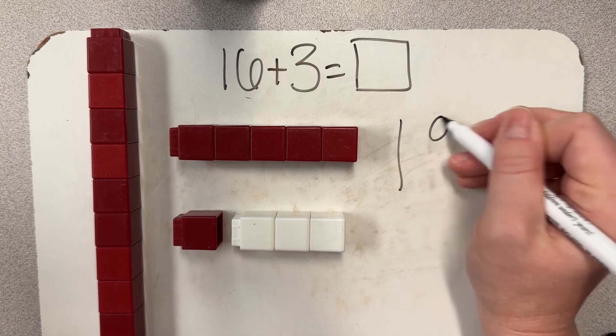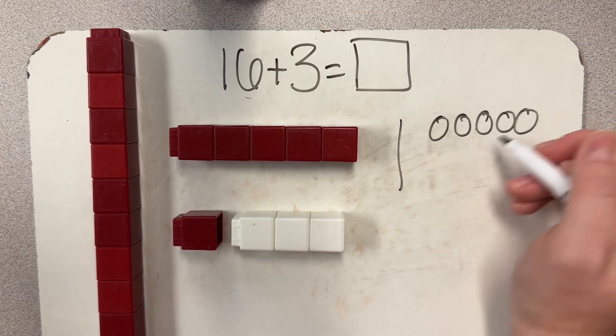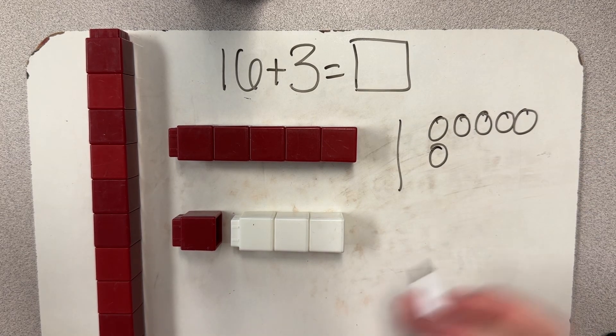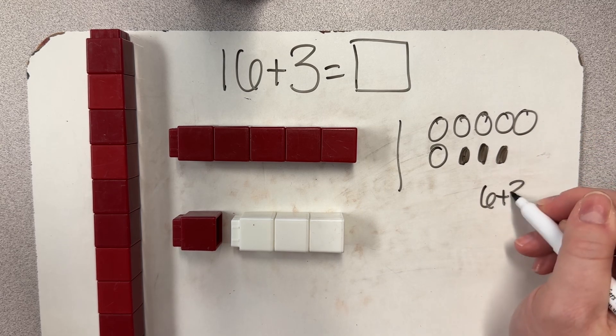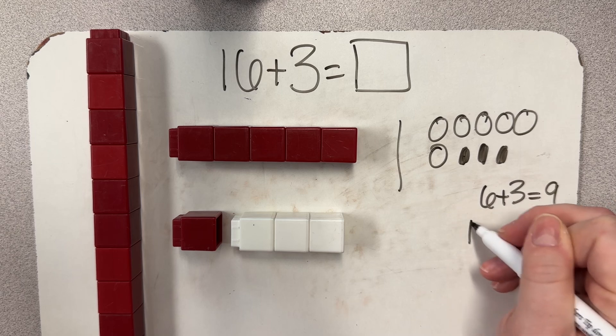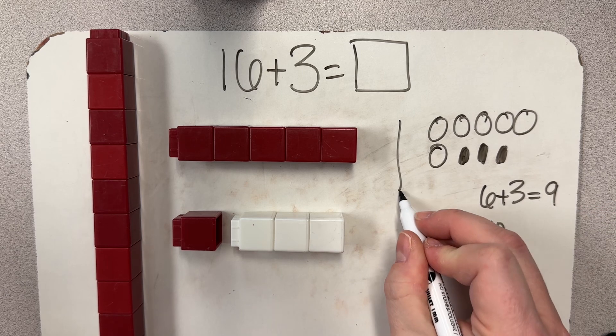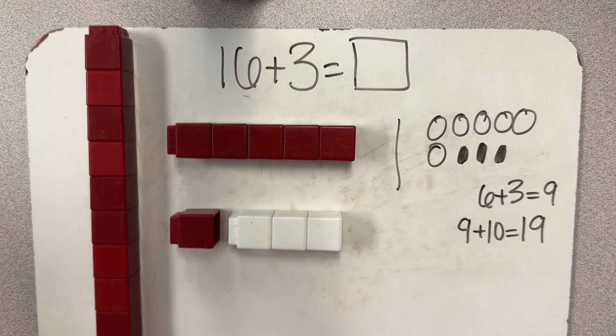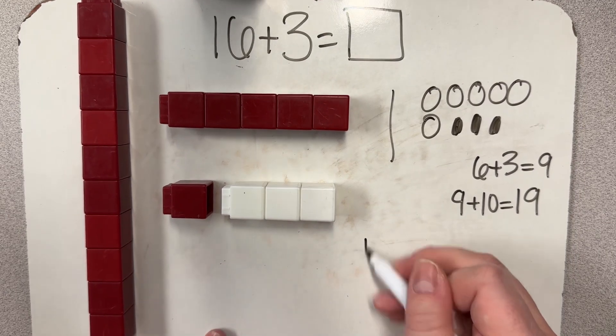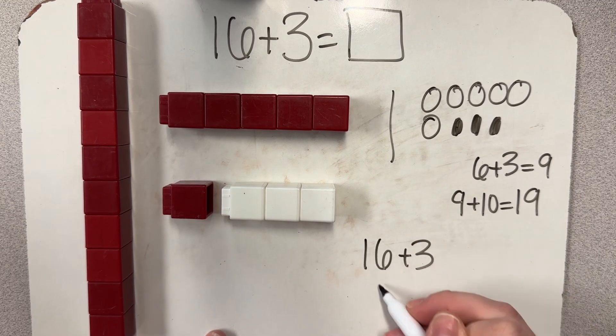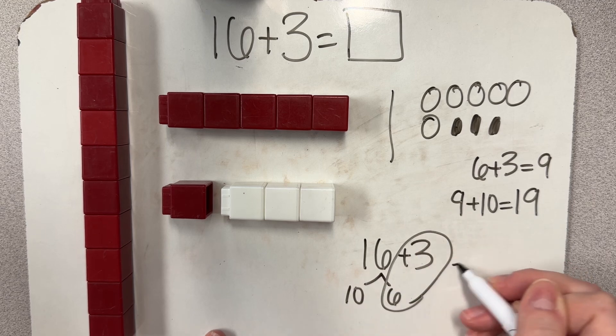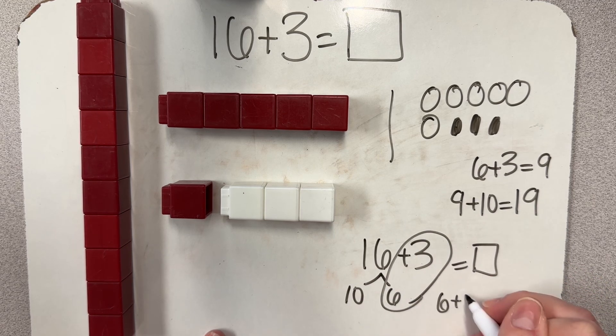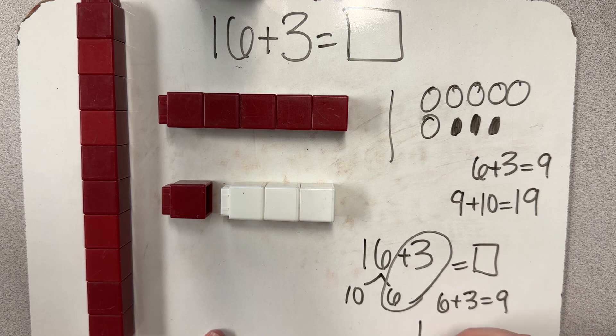And then six and three is nine and add that to my 10. My sketch would look very similar as I would start with 16 and then add three more. So again, I would have six plus three is nine, nine and 10. Here's that 10 is 19. I could also show how I decomposed 16 into 10 and six. Six and three is nine, 10 and nine is 19.